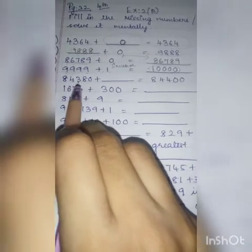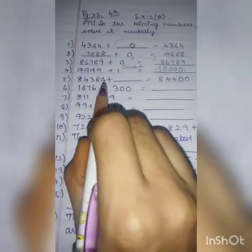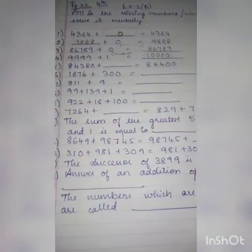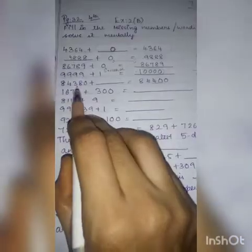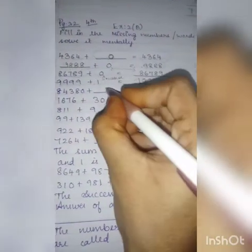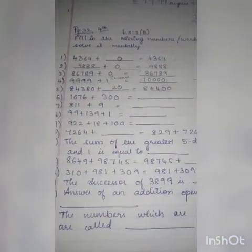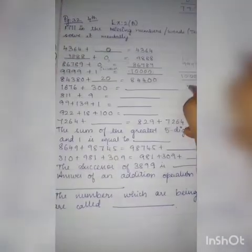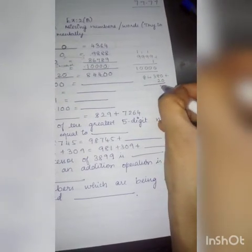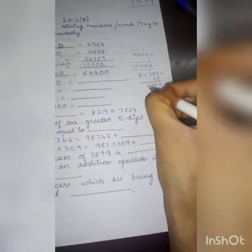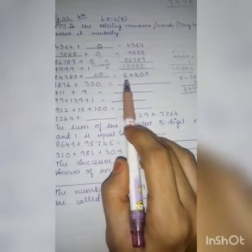Now, 84,380 plus blank gives 84,400. Think about it: 380 and 400 — what is the difference? 20. So if I add 20, I will get 84,400. Let me prove it: 84,380 plus 20. 0 plus 0 is 0; 8 plus 2 is 10, write 0 carry 1; 3 plus 1 is 4; 4; 8. So the answer is 84,400. If I have 84,380 plus 20, I get 84,400.